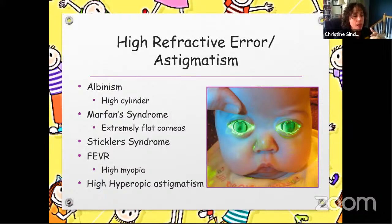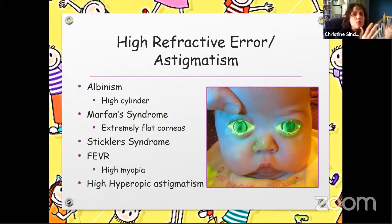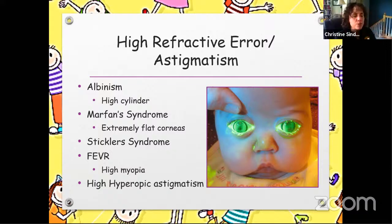Marfan syndrome children have extremely flat corneas — on average below 40 diopters. This can be difficult because if they are aphakic, the lens is going to drop down and be pushed down. If they're not aphakic, they're probably extremely myopic, and there's a lot of weight and volume to that lens. If the lens is displaced in Marfan's, you should check the vision through the lens and through the aphakic crescent if they have it. Sometimes children will see better aphakically than through their own intraocular lens.